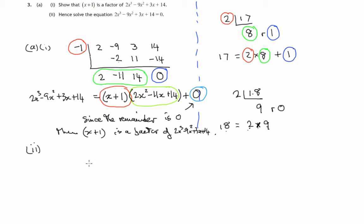Hence, solve that equation. So we've got 2x cubed minus 9x squared plus 3x plus 14 equals 0. And this cubic expression is the one that we've just factorised. So let's replace it by what we've discovered about the polynomial. Now, we can go further than this.